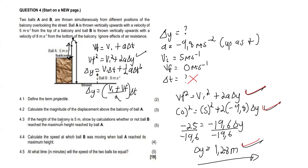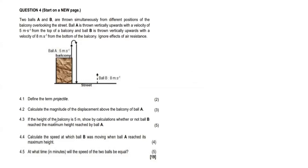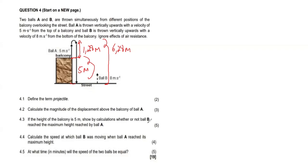Question 4.3: If the height of the balcony is 5 meters, show by calculation whether or not ball B reached the maximum height reached by ball A. From the balcony top to the max height, we said it's 1.28 meters. The balcony is 5 meters tall, so the total maximum height above the street is 5 + 1.28 = 6.28 meters. We want to confirm whether the height reached by ball B is greater than or less than 6.28 meters.